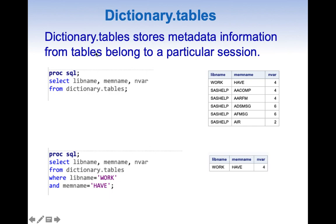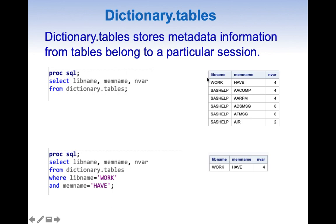I do not want to go into details of dictionary.tables because that itself becomes a very big topic. The bottom line is that dictionary.tables stores information about the tables. Here I am running a PROC SQL query selecting libname, memname, and nvar from dictionary.tables, and you can see the libname, memname, and number of variables for various tables.